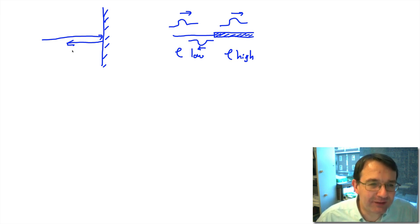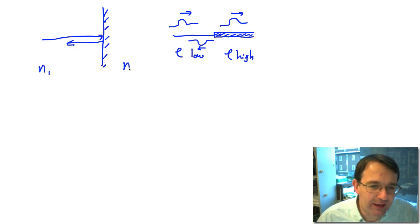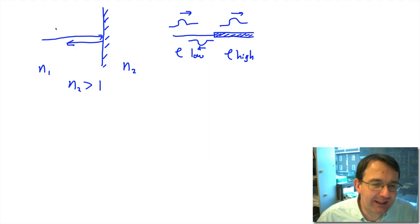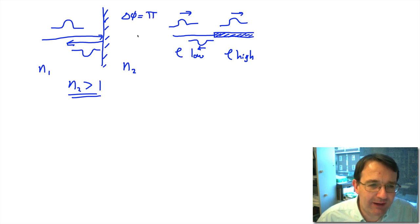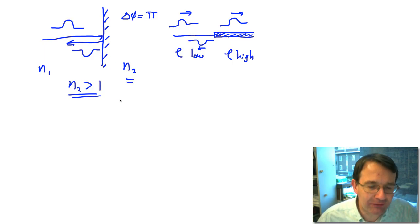This is what happens with light when we have a refractive index n1 here and n2 there. If n2 is greater than n1, we have this situation: if we had a light pulse going in, the reflected light pulse would have an inverted phase. We have a phase inversion — the change in phase is equal to π — and this phase inversion occurs for light when it reflects off the surface of a medium which has a higher refractive index.